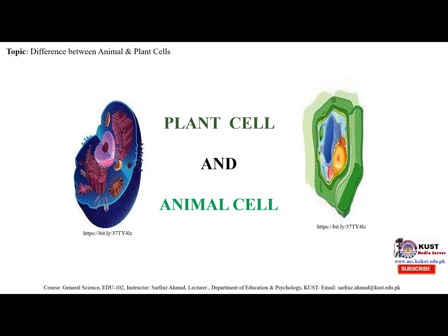In plant cells, the organelles found only in plant cells include chloroplasts, cell wall, plastids, and large central vacuole.